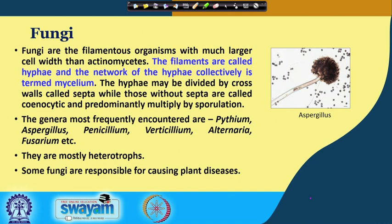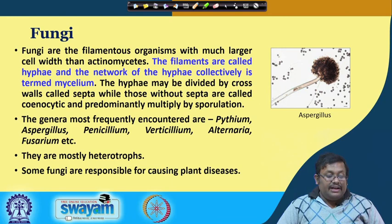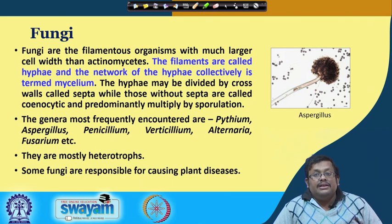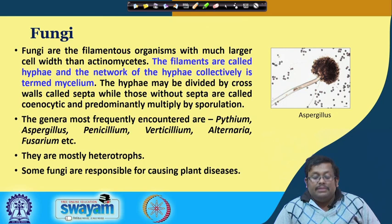Let us start from fungi. Fungi is another important soil microflora — it is a smallest achlorophyllous plant. Fungi is a filamentous organism with much larger cells than actinomycetes. The filaments are called hyphae and the network of hyphae is collectively termed mycelium. The hyphae may be divided by cross walls called septa, while those without septa are called coenocytic, and fungi predominantly multiply by sporulation.